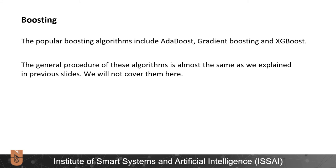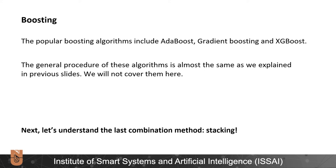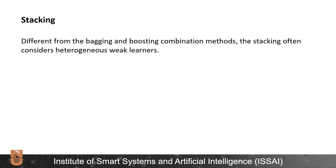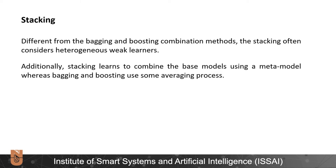The general procedure of these algorithms is almost the same as we explained in previous slides, and therefore we will not cover them here. Next, let's understand the last combination method, which is stacking. Different from the bagging and boosting combination methods, stacking often considers heterogeneous weak learners. Additionally, stacking learns to combine the base models using a meta model, whereas bagging and boosting use some averaging process.